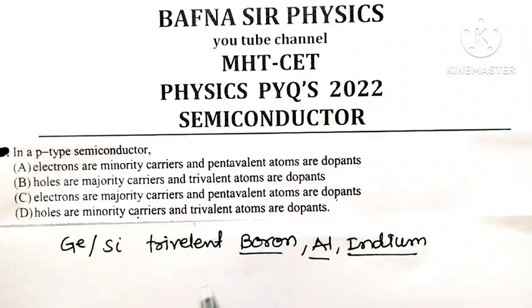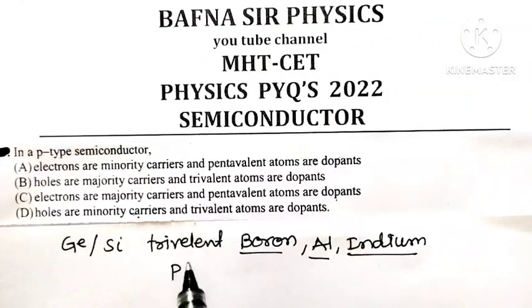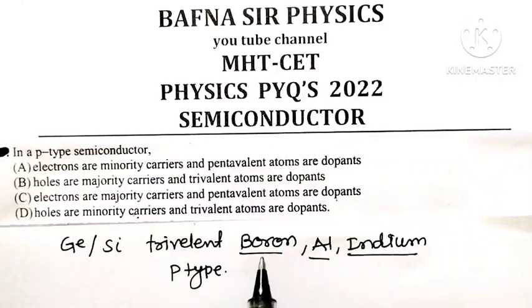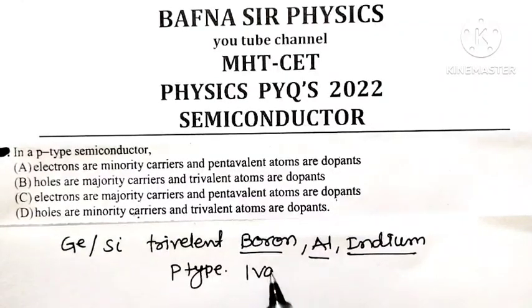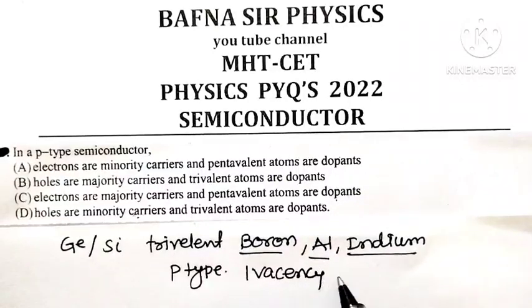then they form P-type semiconductor because every impurity atom produces one vacancy of electron, and that vacancy of electron is known as a hole.